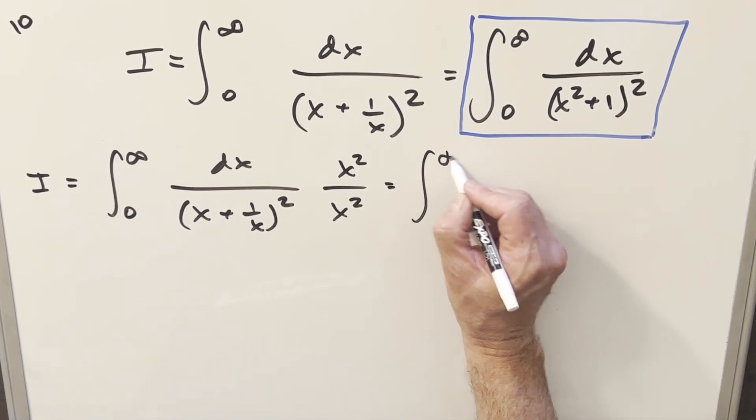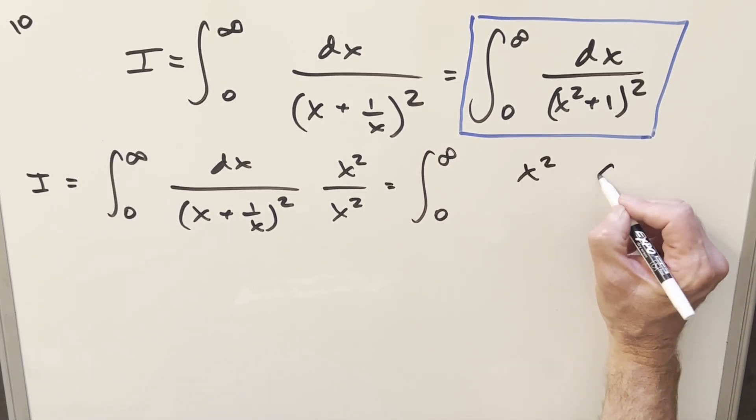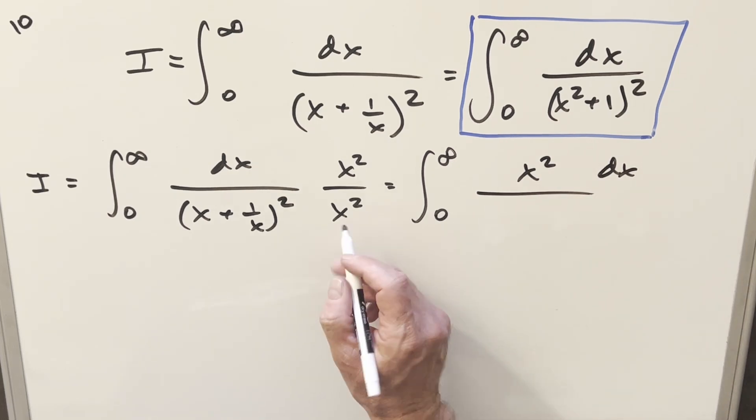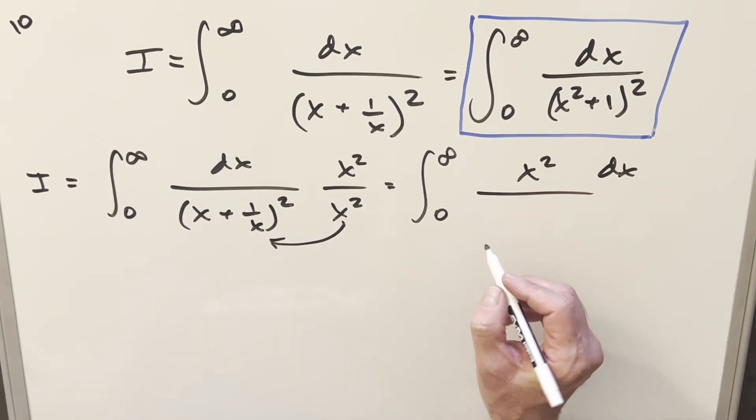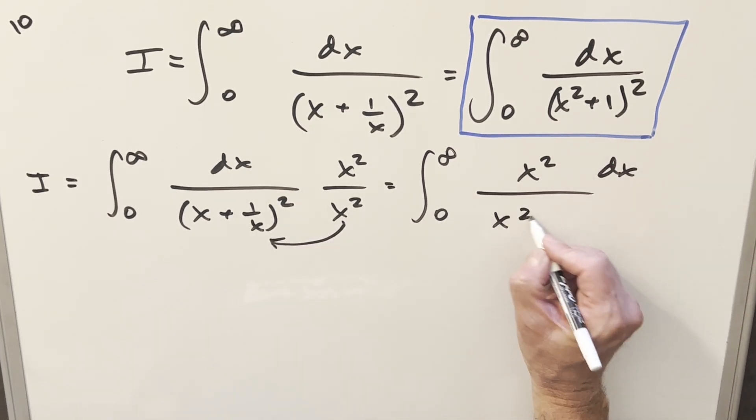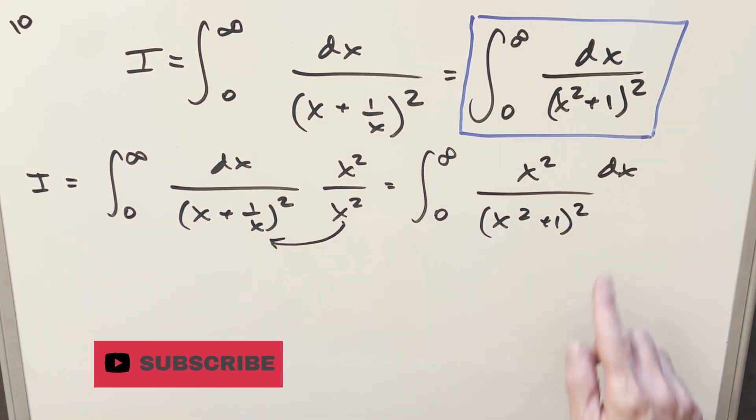And so when we do this, let's see what happens. Now we have an x squared in the numerator. This is going to be just like what we did before multiplying in the u. So this is going to become just like this x squared plus one, all squared. Again,